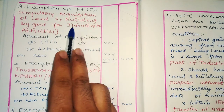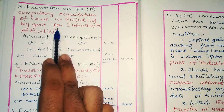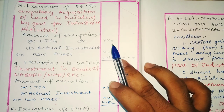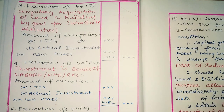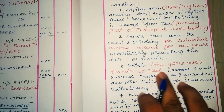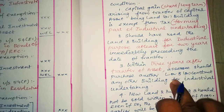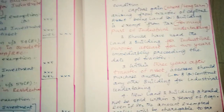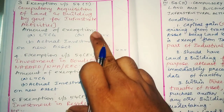Next, Exemption Under Section 54D — Compulsory Acquisition of a Land and Building by the Government for infrastructural activities. When the government compulsorily acquires your land and building for infrastructure purposes, you can reinvest the compensation amount. You must purchase or construct land and building within 3 years of receiving the compensation. If you do so, you can apply for the capital gains exemption.